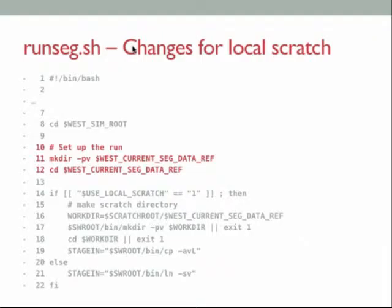Next up is RunSeg in the westpa_scripts folder. Ellipsis marks in the slides indicate cut portions. We've made changes to run on local scratch. In the NaCl GROMACS tutorial you just have NaCl in implicit solvent — two little beads, not particularly expensive dynamics. But p53 peptide fragment in explicit solvent is going to be much more expensive, so if you want to run on a supercomputing cluster you'll want to make changes for your local scratch.